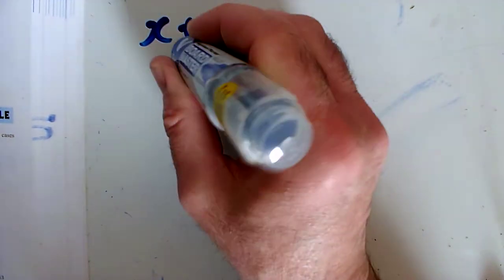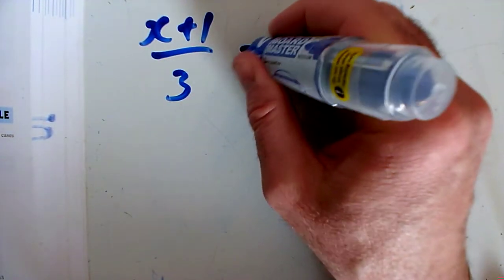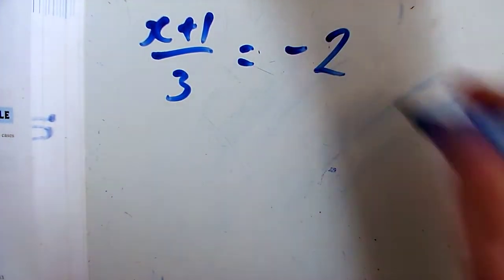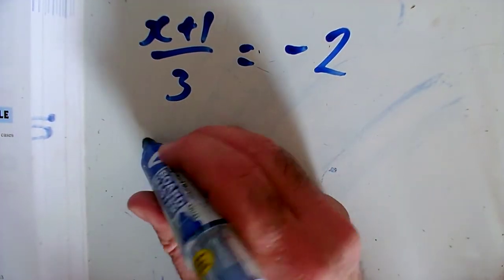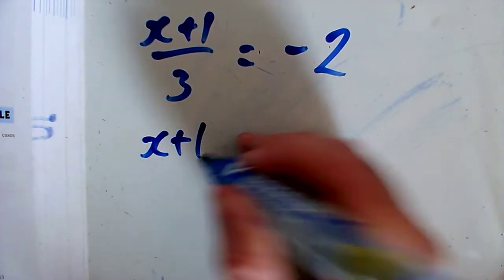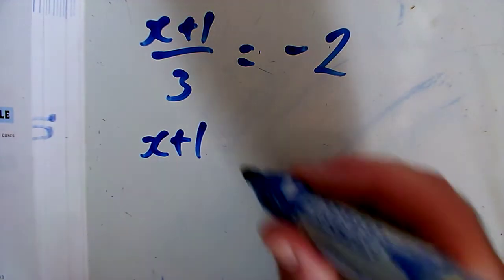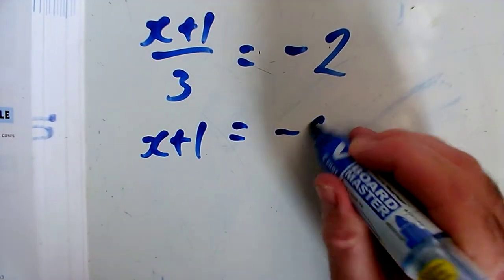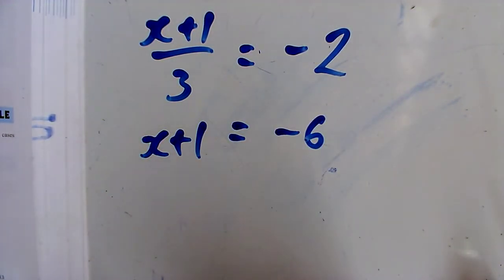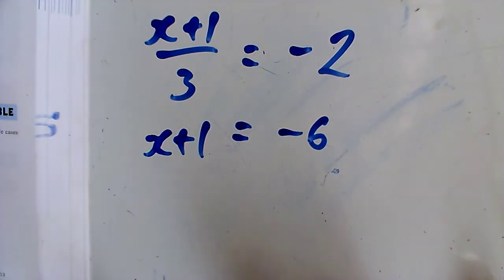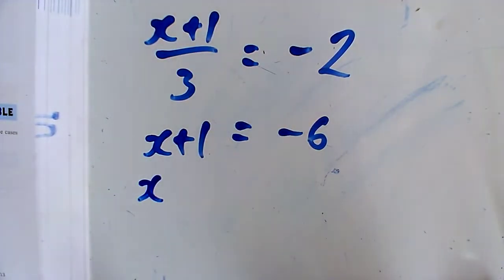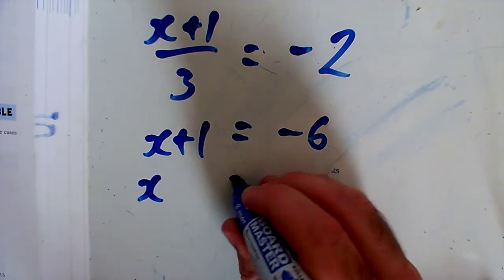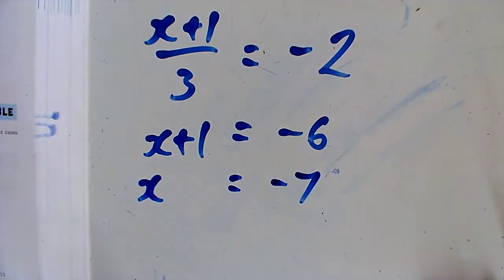Question I: x plus 1 over 3 equals minus 2. To get rid of the fraction, I'm going to multiply by 3 so I just have the x plus 1 on top. Multiplying both sides by 3, I get x plus 1 equals minus 6. Taking away 1 from both sides gives x equals minus 7.